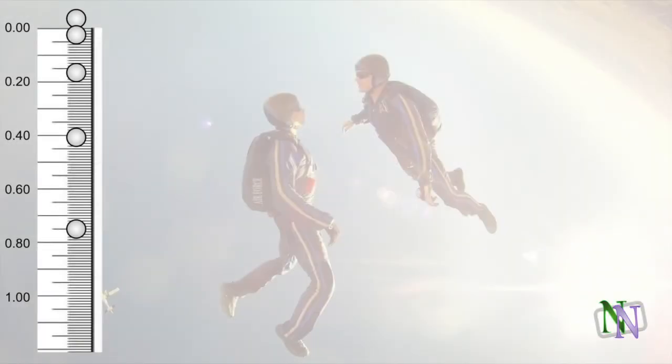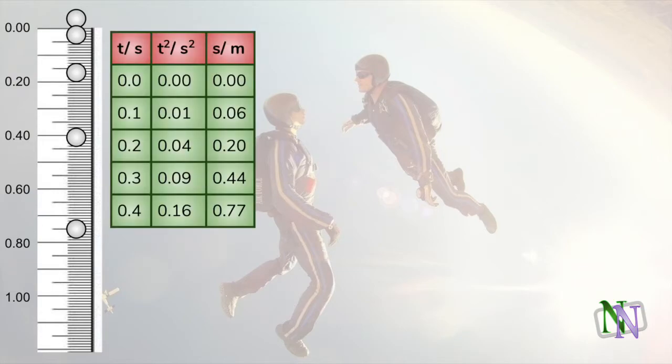It is also possible to use data from a ticker timer or photograph to draw a graph of motion and use the gradient to find the acceleration. Here is a falling ball. The motion of this falling ball is recorded in the table. We know from the equation that distance is proportional to time squared, so these are the values we plot.